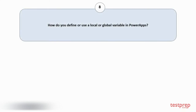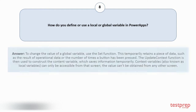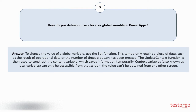Question number 8. How do you define or use a local or global variable in Power Apps? To change the value of a global variable, use the set function. This temporarily retains a piece of data, such as the result of operational data or the number of times a button has been pressed. The update context function is then used to construct the context variable, which saves information temporarily. Context variables can only be accessible from that screen; the value can't be obtained from any other screen.